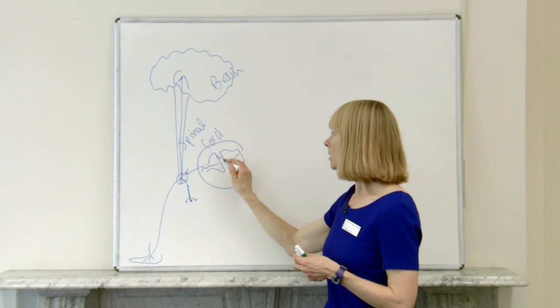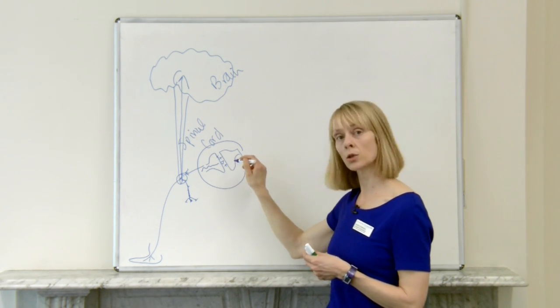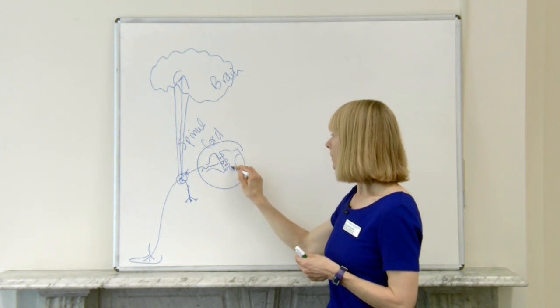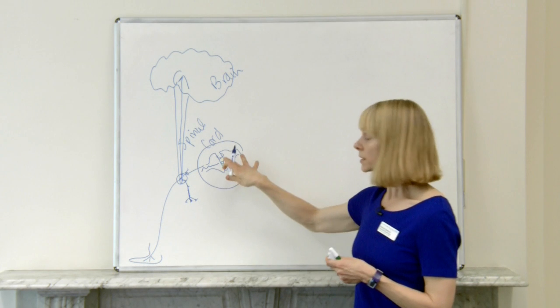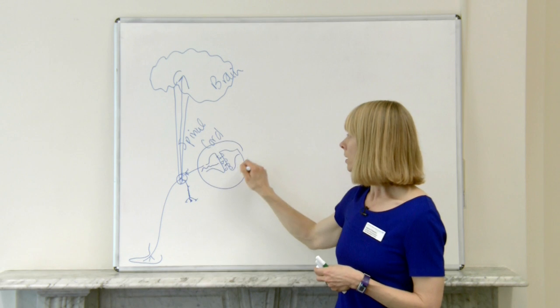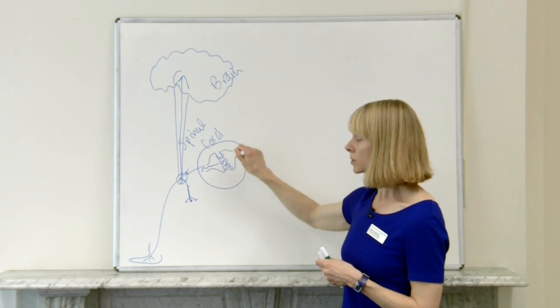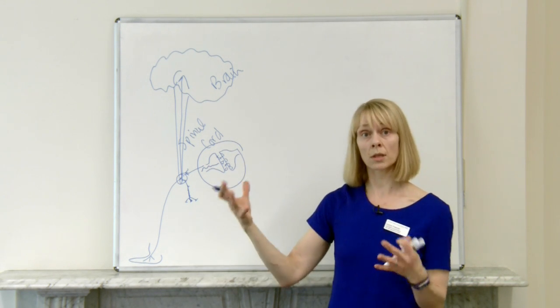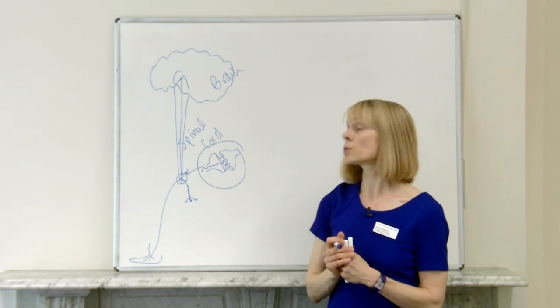Now it does that by releasing neurotransmitters and neurochemicals, and on the other side we've got receptors. Now this is quite a complex area that we don't fully understand, but the receptors and the neurochemicals are very individual to you and individual to the environment and the thoughts and the feelings and what you're doing.